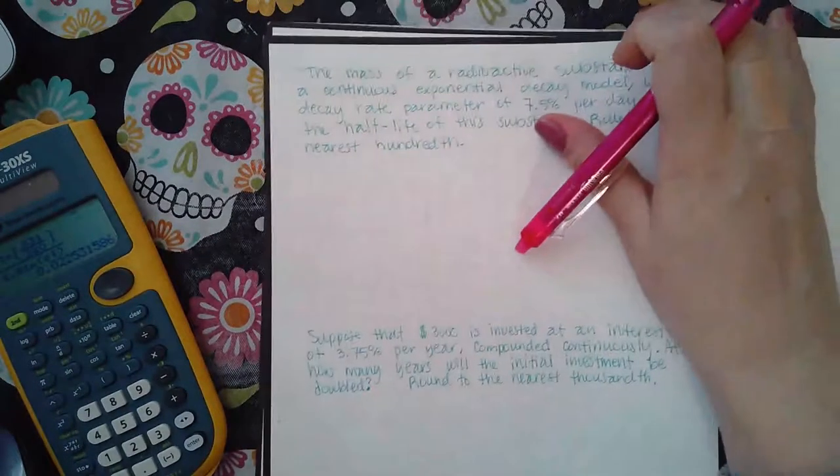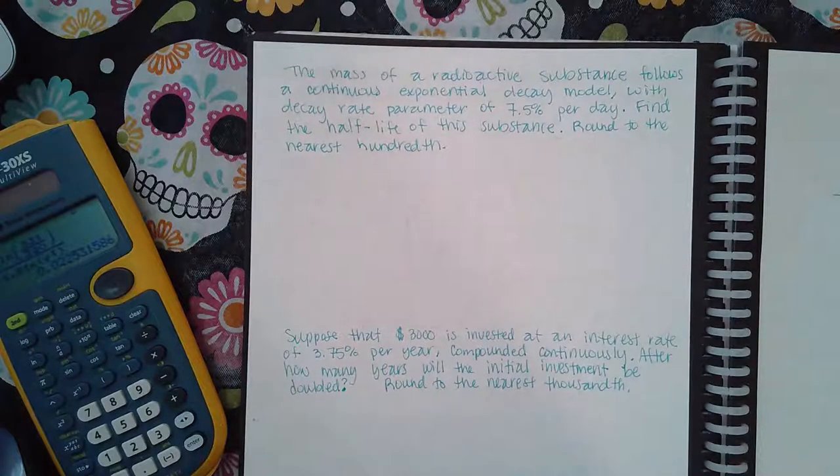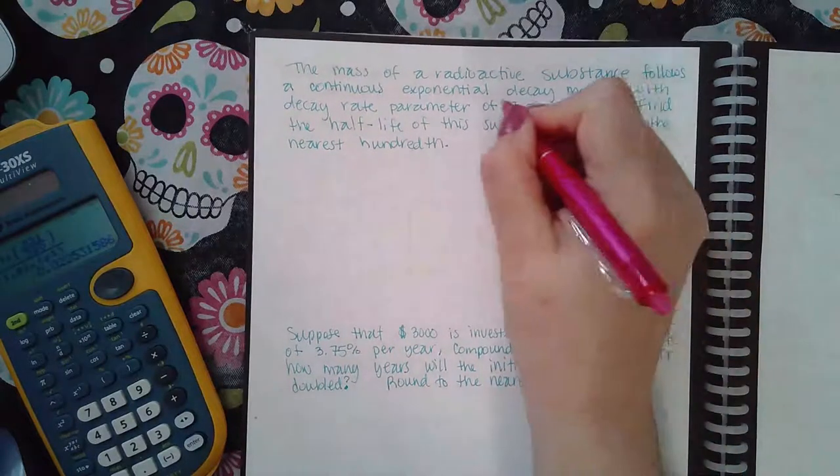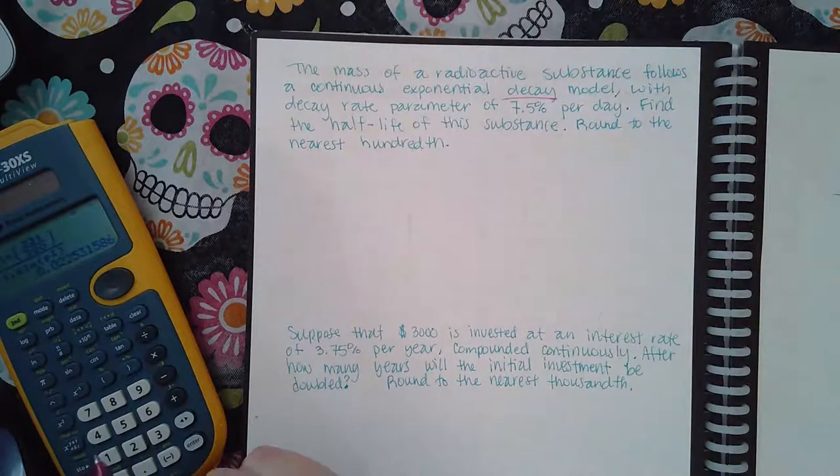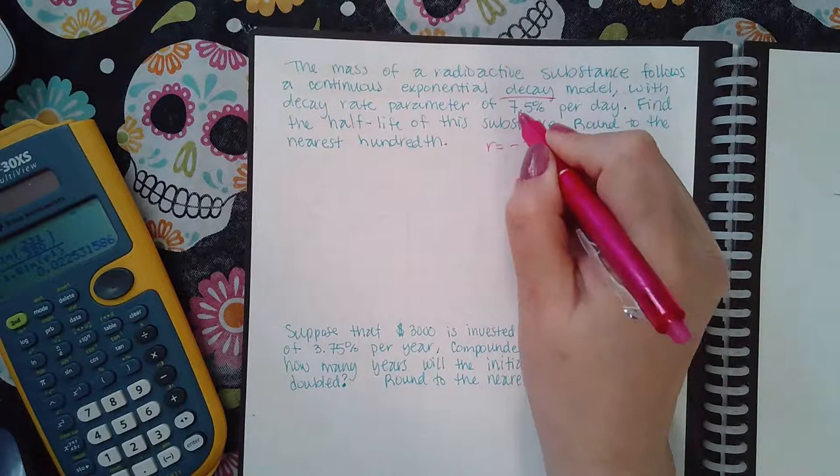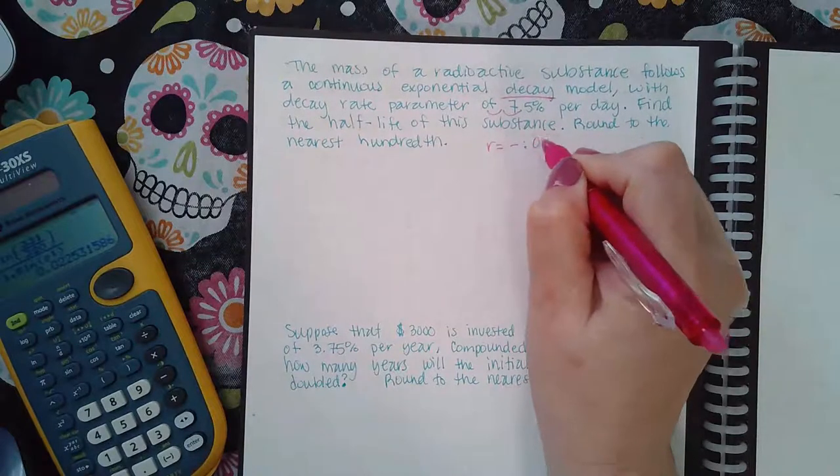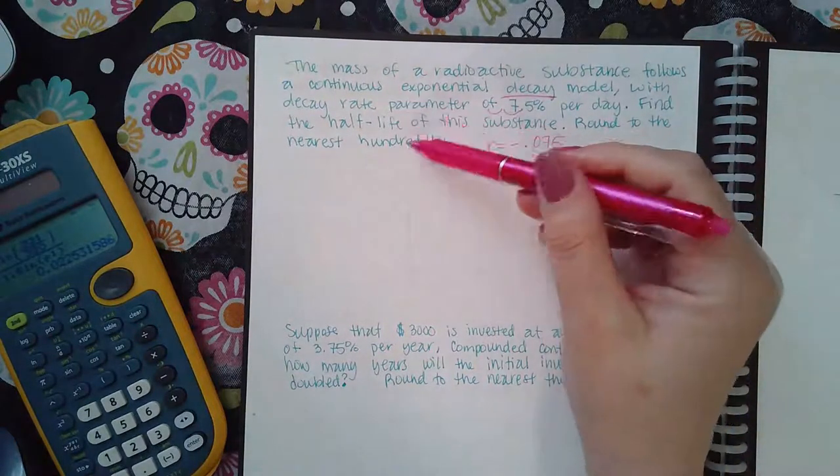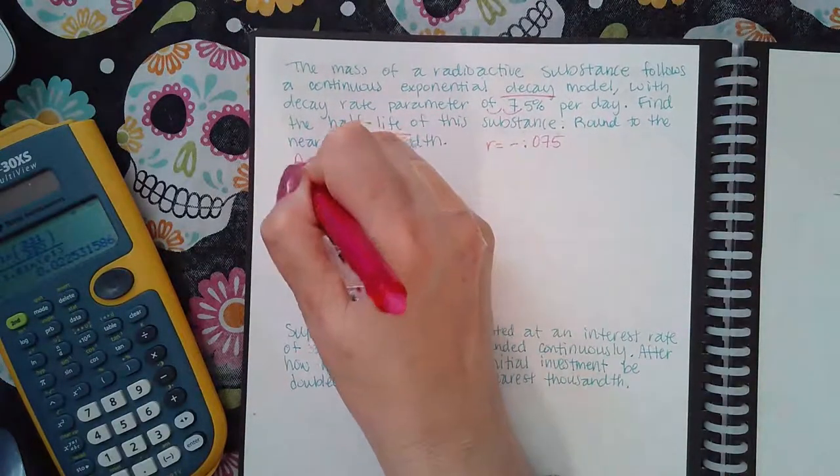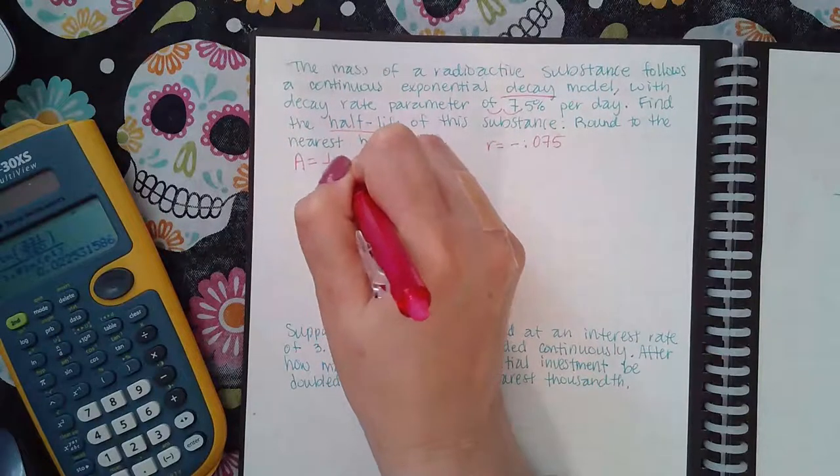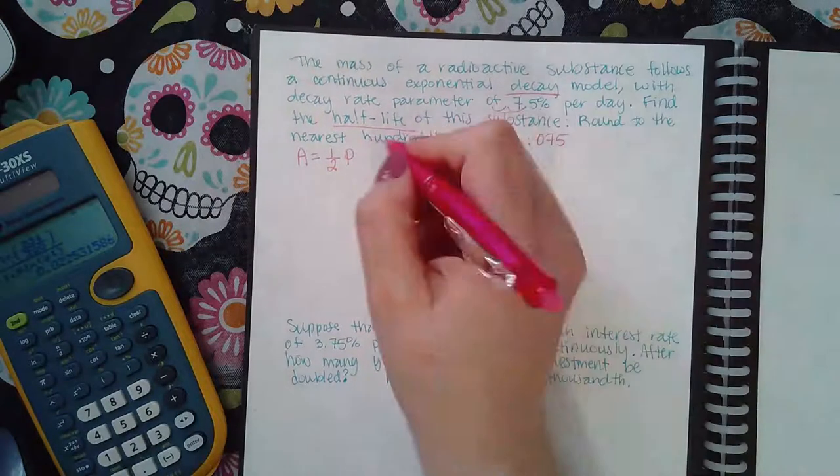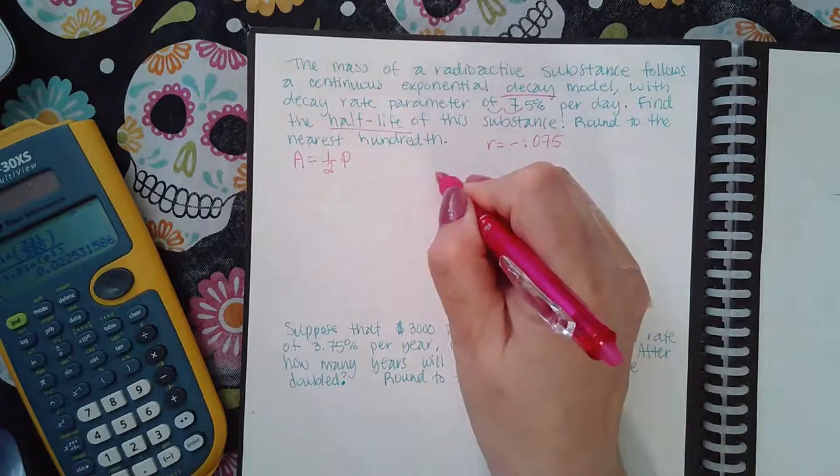Now I do have another example. It says the mass of a radioactive substance follows a continuous exponential decay model, so this time the r should be negative with a decay rate of 7.5 percent. So that means it's going to be negative 0.075. And it says find the half-life of this substance. Half-life means when your amount afterward is half of what you started with.